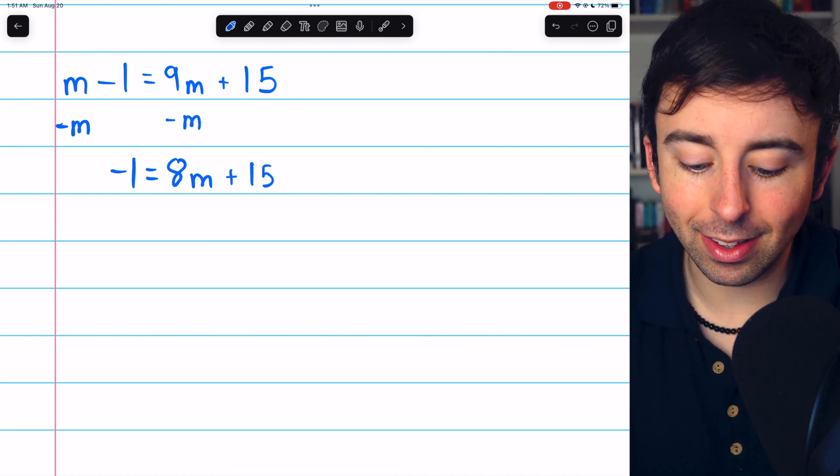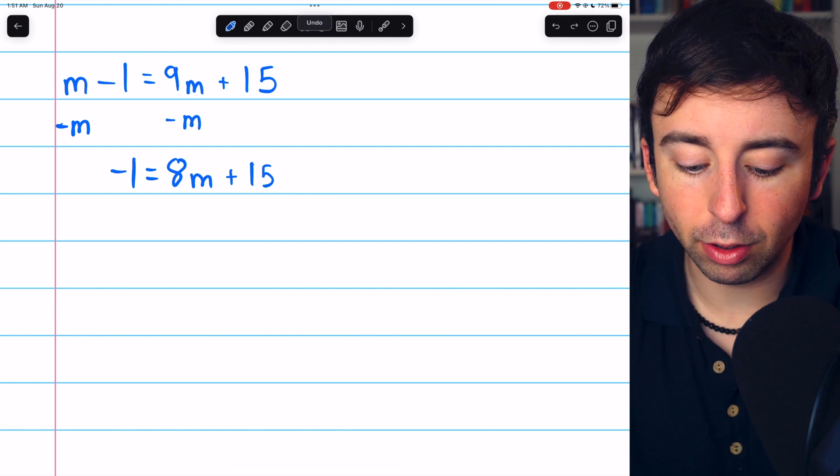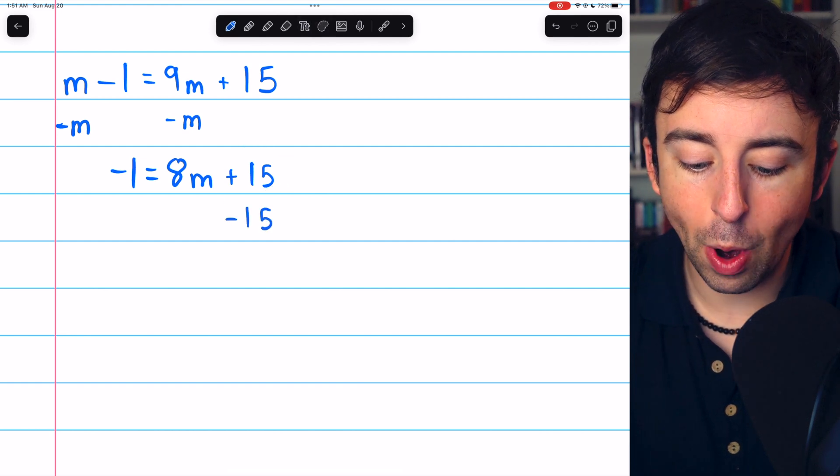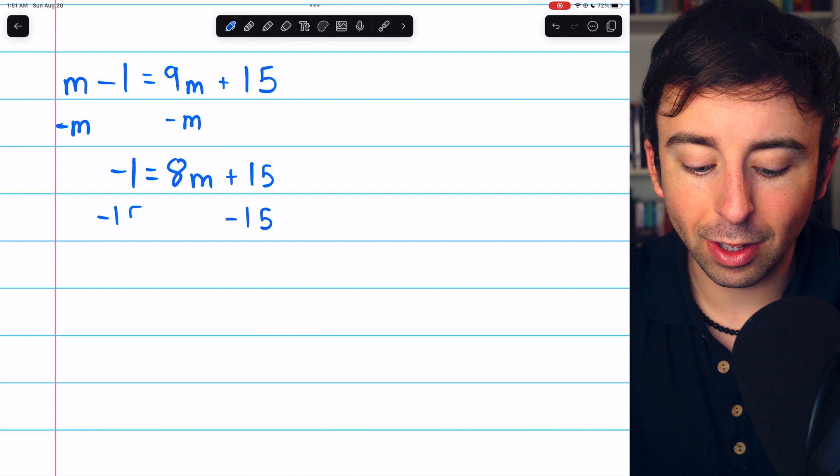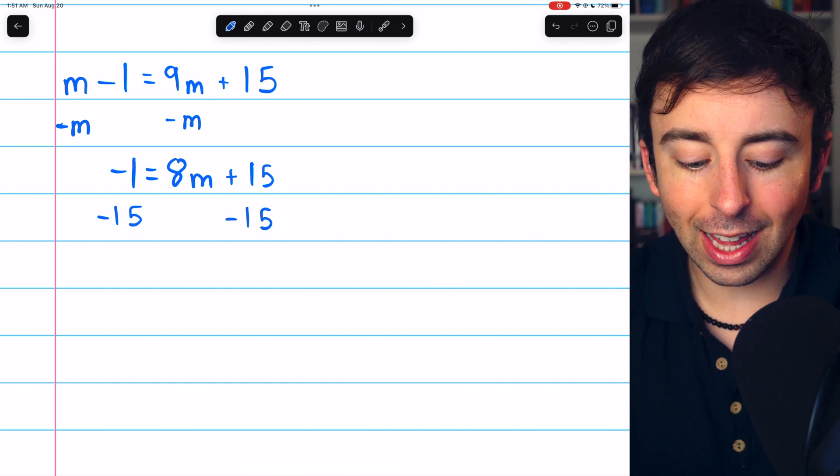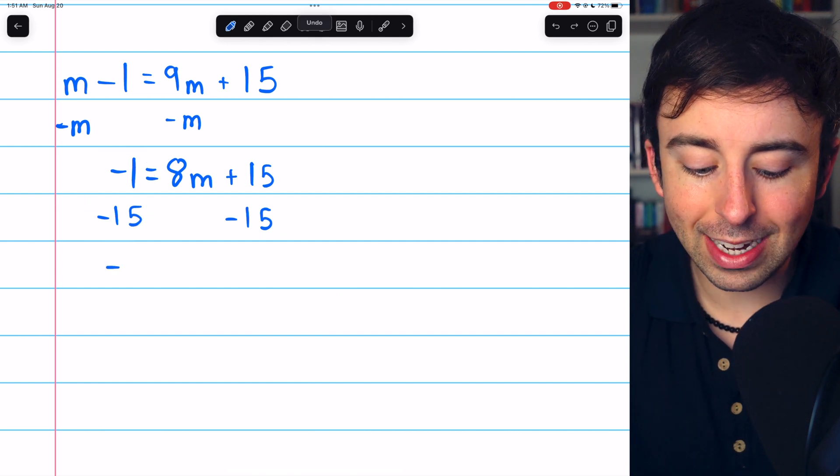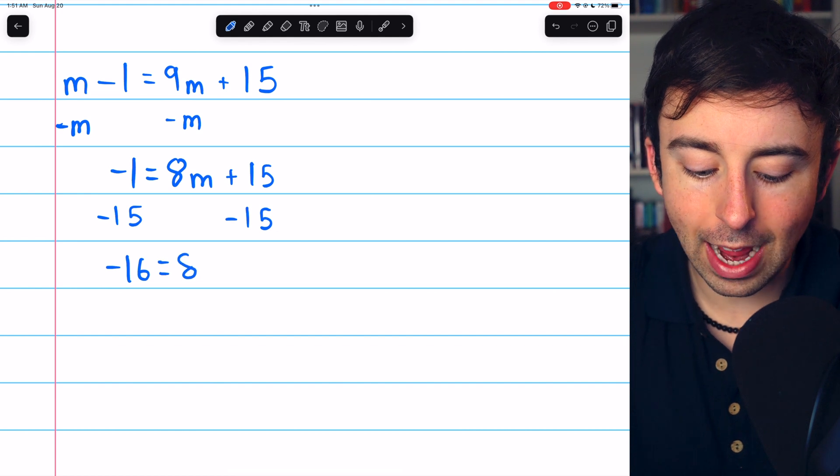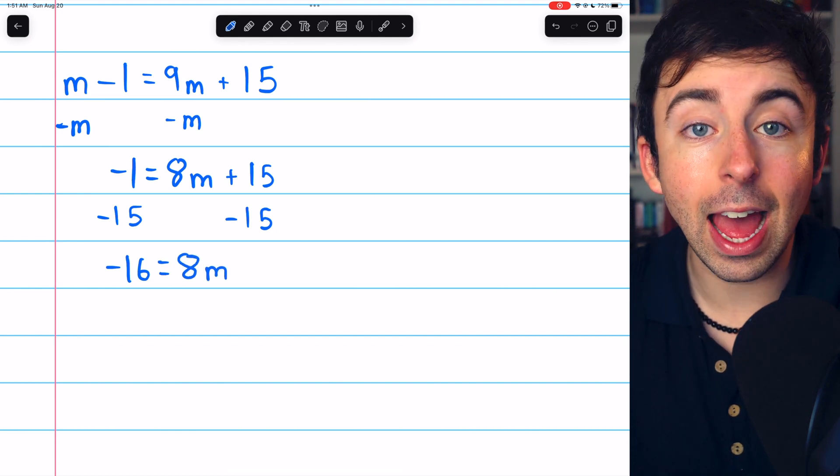Now we're trying to get m by itself, so let's get rid of this plus 15 by subtracting 15. We have to do that to both sides. On the left, negative 1 minus 15 is negative 16. And on the right, now we just have 8m.